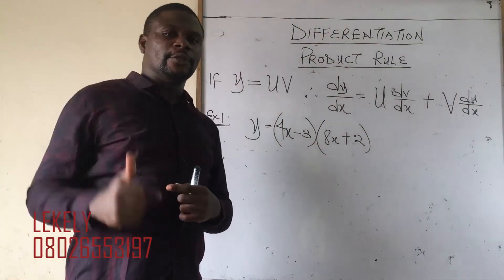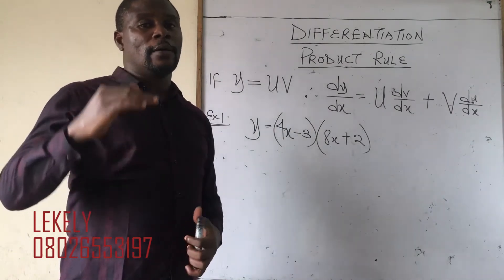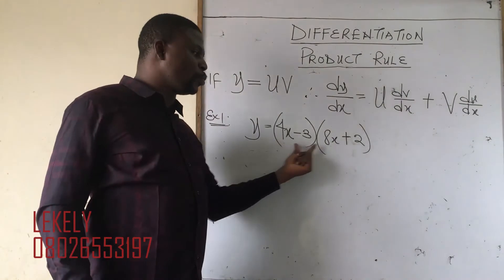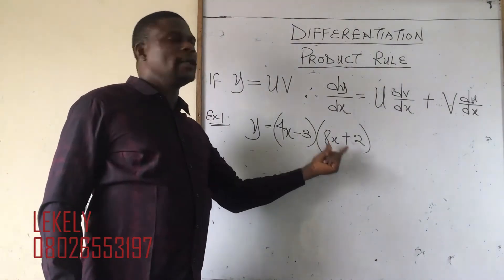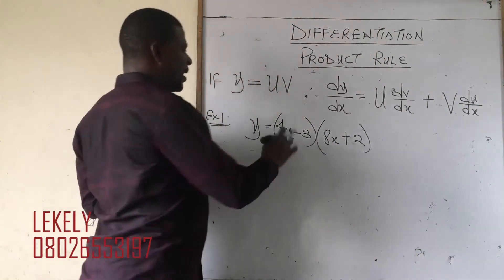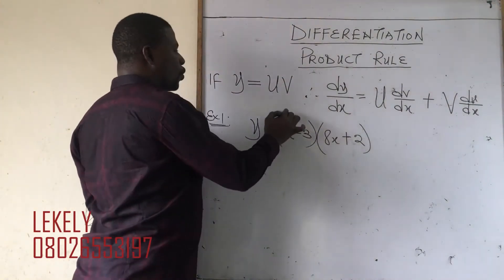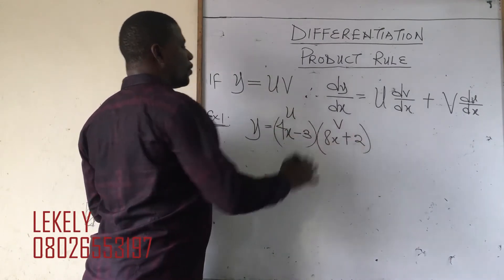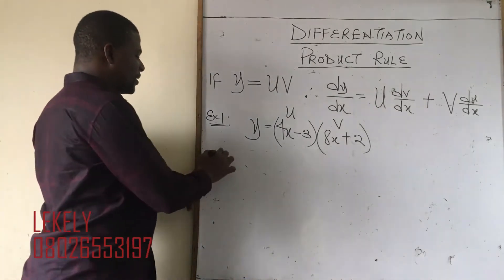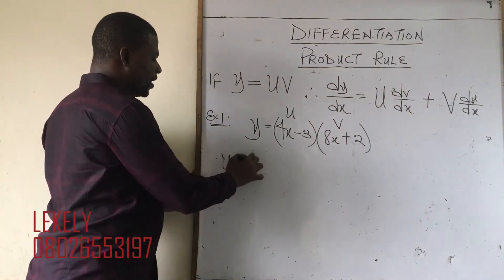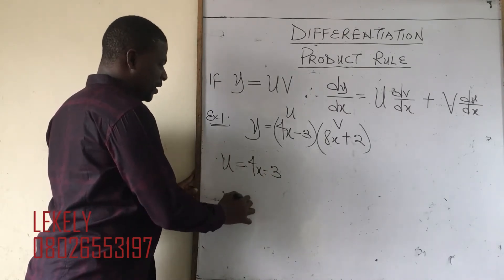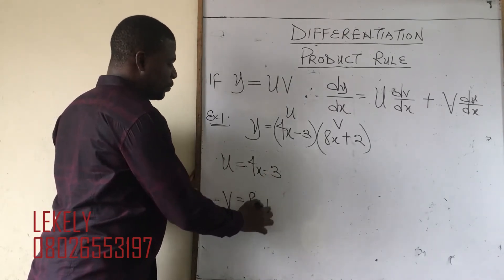For chain rule — function of a function or composite function — the moment you see a bracket with a power, you know it is composite rule. But for product rule, the moment you have two brackets side by side, you know it is product rule. The first step is to call the first bracket u and the second bracket v. So our u is 4x minus 3 and our v is 8x plus 2.